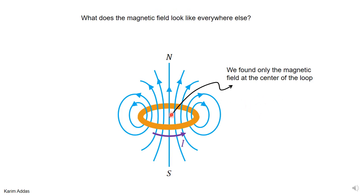This is what a loop of current looks like, with current circulating in a circle. We've addressed the magnetic field at the center of the loop, but the field pattern everywhere else is quite complicated — much more so than, for example, the electric field of a point charge. The field lines loop around continuously; they're cut off in the diagram only because the whole screen would otherwise be filled.